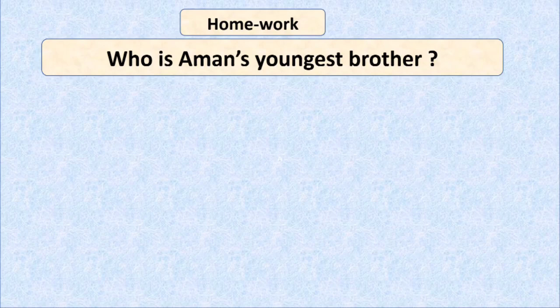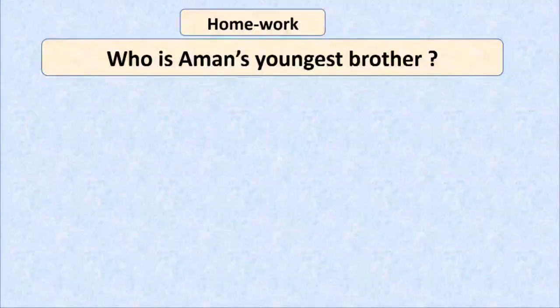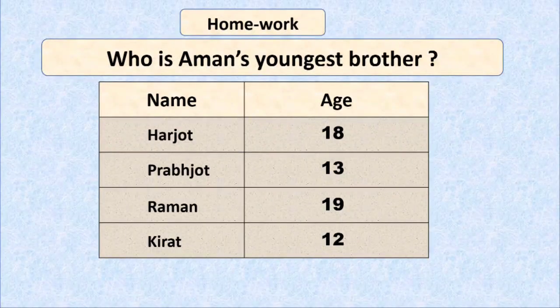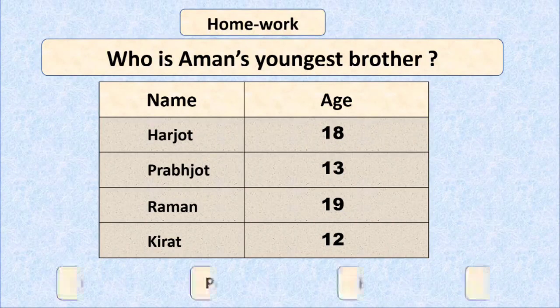Hope you have understood all these four questions properly. You have to note them down in your notebooks. Now, this is the question for your homework: who is Amman's youngest brother? A table is given with Amman's brothers' names in the first column and their ages in the second column. The four options are also given, and you have to find Amman's youngest brother and tick mark the right option.